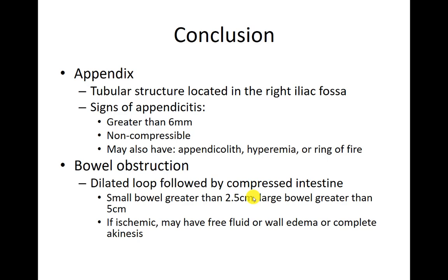In conclusion: the appendix is a tubular structure in the right lower quadrant. If you see something greater than six millimeters, non-compressible, or with associated signs — appendicolith, hyperemia (ring of fire), or free fluid — that's concerning for appendicitis. For bowel obstruction, look for dilated loops of bowel followed by a decompressed area: greater than 2.5 centimeters for small bowel, greater than five centimeters for large bowel. If you see free fluid, wall edema, or complete akinesis, be concerned about ischemic complications from strangulation.